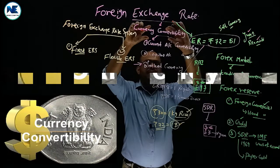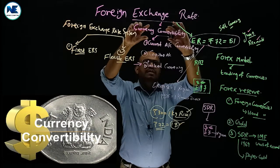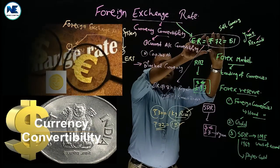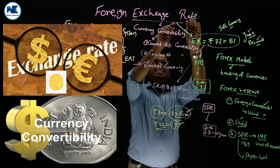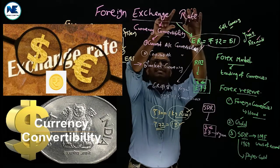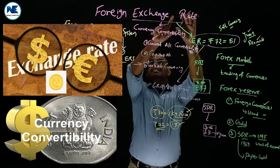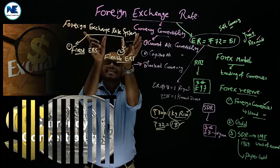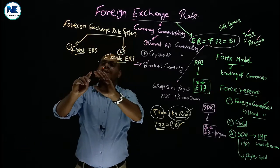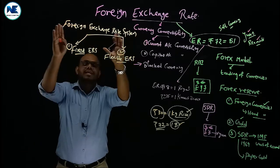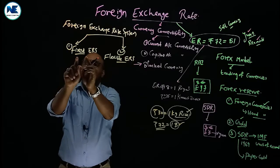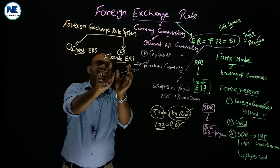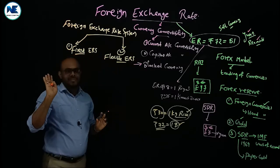Currency convertibility — that process is the foreign exchange rate. The foreign exchange rate is the system, and the foreign exchange rate system broadly has two important types: the fixed exchange rate system and the flexible exchange rate system.